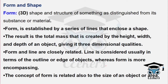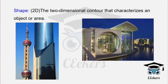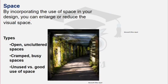The concept of form is also related to the size of an object or area. Shape is two-dimensional — it can be a rectangular shape or a circular shape. Form is the 3D equivalent, referring to the object in the area.